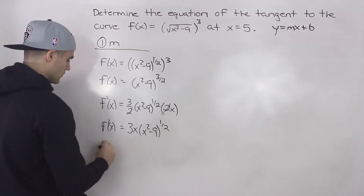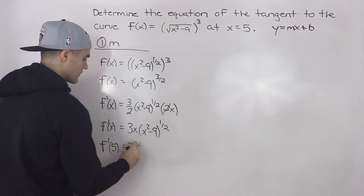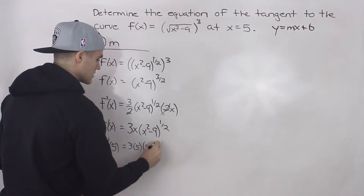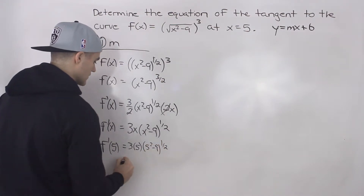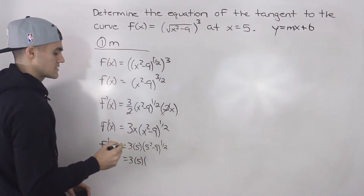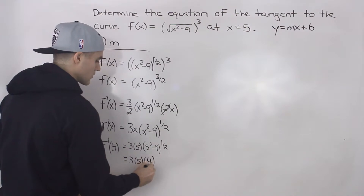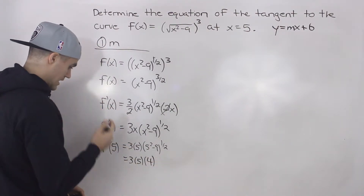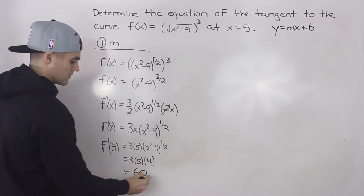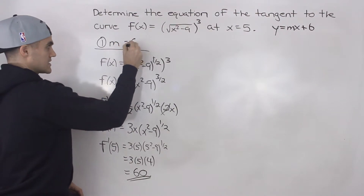So what is the derivative at x equals 5? We'd have 3 times 5, and then 5 squared minus 9 to the power of a half. That's 3 times 5 times the square root of 16, which is 4. So we get 3 times 5 times 4, which equals 60. The slope of the tangent is 60.